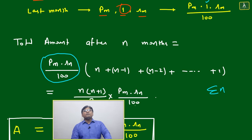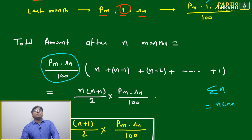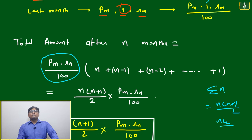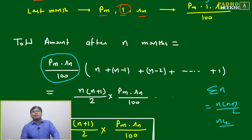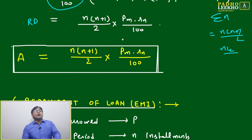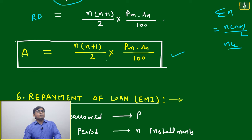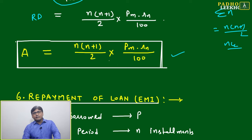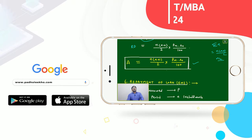This series N + (N−1) + ... + 1 is the sum of N natural numbers, which equals N × (N+1) / 2 — also known as a triangular number. So the total RD maturity amount is: N × (N+1) / 2 × PM × RM / 100. Here, N is the number of months, RM is the monthly interest rate, and PM is the equal monthly deposit amount.